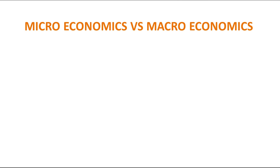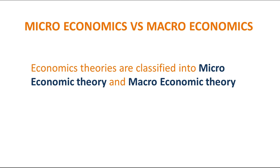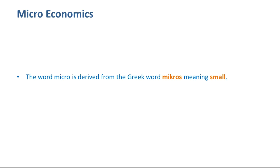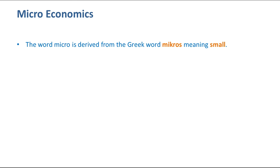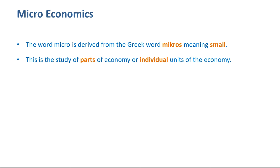Welcome to HDL Lectures. Today I'm going to teach you what is micro and macroeconomics. Economic theories are classified into microeconomic theory and macroeconomic theory. The word micro is derived from the Greek word 'micros' meaning small. This is the study of parts of the economy or individual units of the economy.